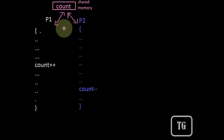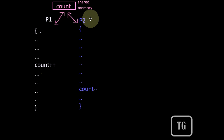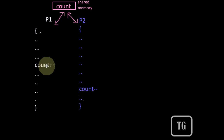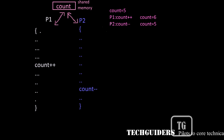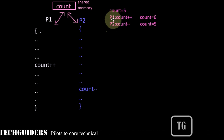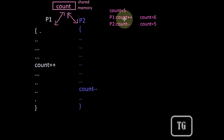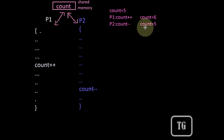Consider the same example. Let P1 be a process which performs an increment operation on one shared variable named count, and let P2 be another process performing a decrement operation on the same shared variable count. If both processes are executed in a non-parallel fashion, one after another — let P1 finish first, then P2 starts. Assume the initial value of count is 5. P1 increments count to 6, then P2 decrements it back to 5. Hence the value of count remains the same.